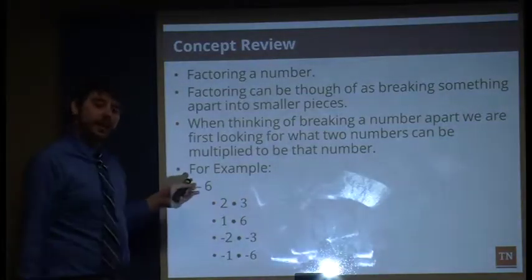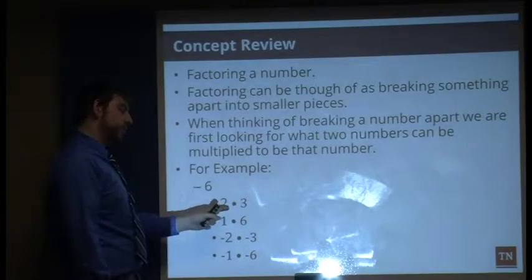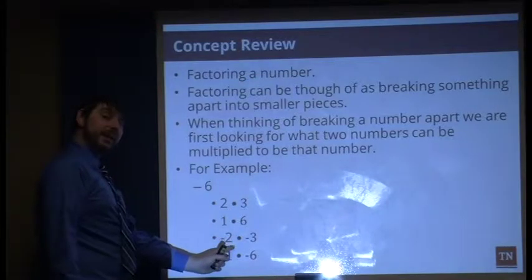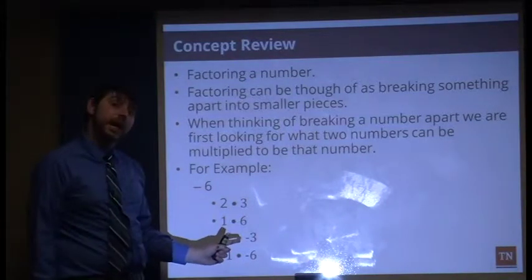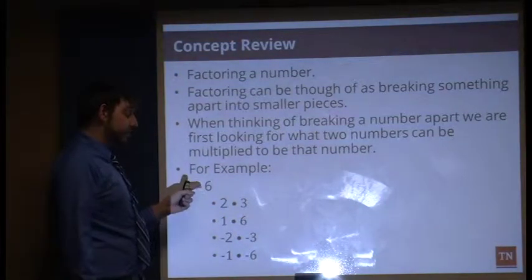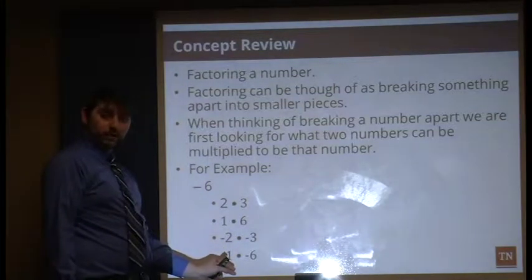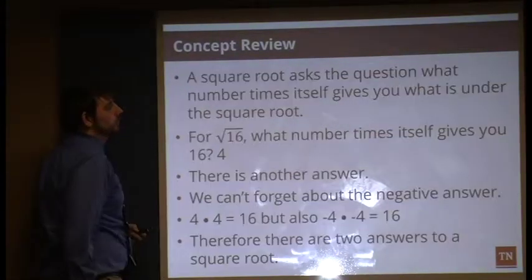Here's another quick example. For the number six: two times three is six, or the negative equivalent, negative two and negative three. Also, one times six is six, or the negative equivalent, negative one and negative six.